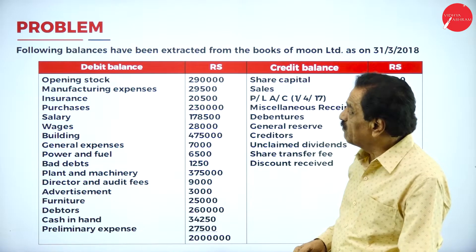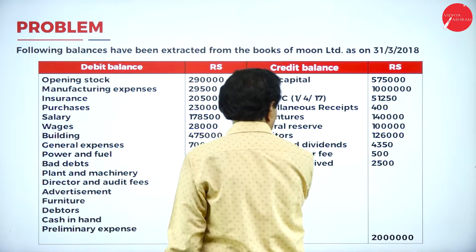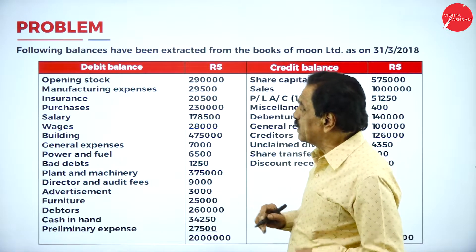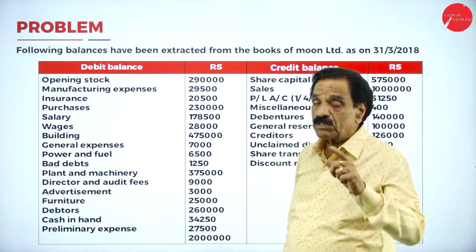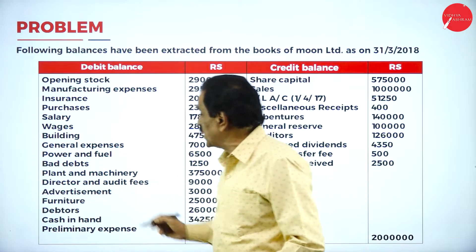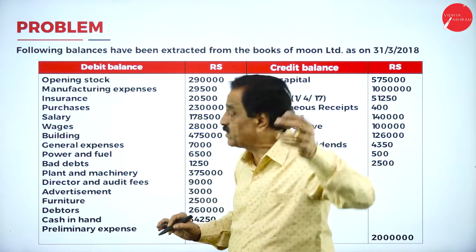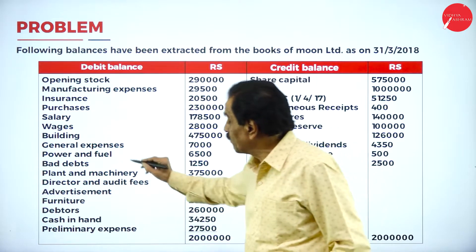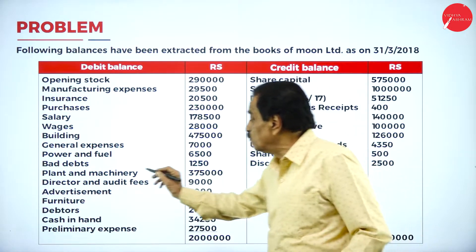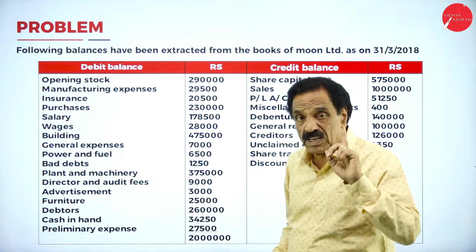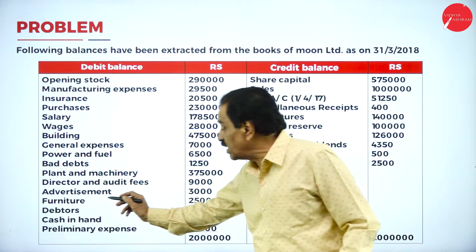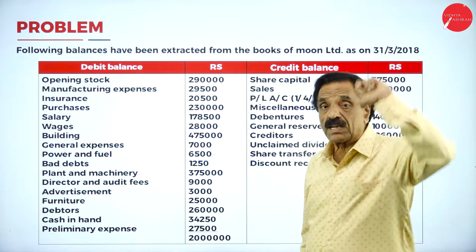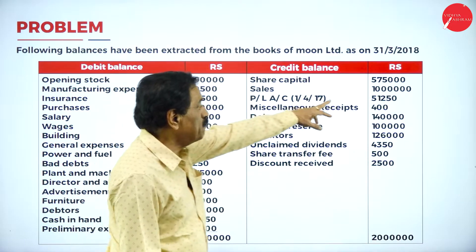This is the problem given here. You must be very careful about the problem. Opening stock and manufacturing expenses are expenditures. Insurance is an expenditure. Purchases will be added. Cost of goods sold = opening stock + purchases minus closing stock. Salary is an expenditure, wages is an expenditure, building is a fixed asset, general expenses is an expenditure, power and fuel is an expenditure, bad debt is an expenditure, machinery is a fixed asset, director and audit fees is an expenditure, advertisement is an expenditure. Debtors and stock are current assets, cash in hand is a current asset.